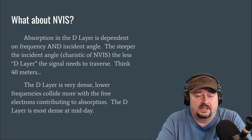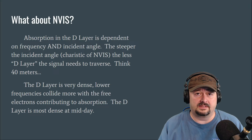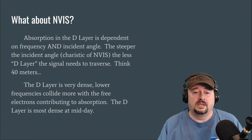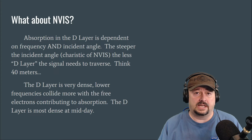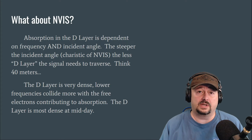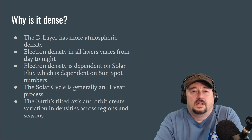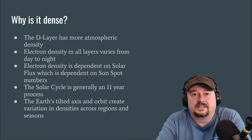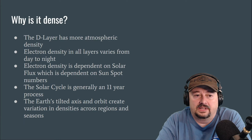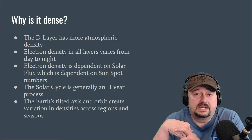The D-layer is most dense at midday because it's the lowest layer — there's more air, more oxygen and nitrogen bouncing around. During the day the sun ionizes those particles, creating free electrons that are also bouncing around, making it an even denser layer. Electron density in all layers varies from day to night — we have more electron density during the day, and that dissipates at night due to the absence of sunlight.